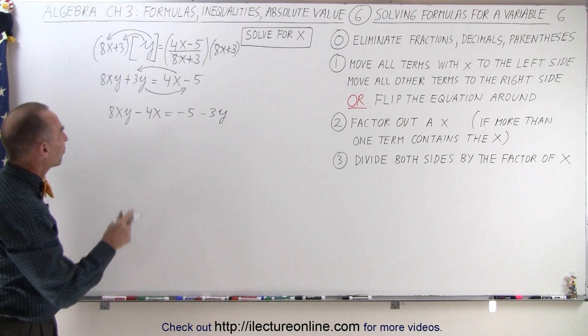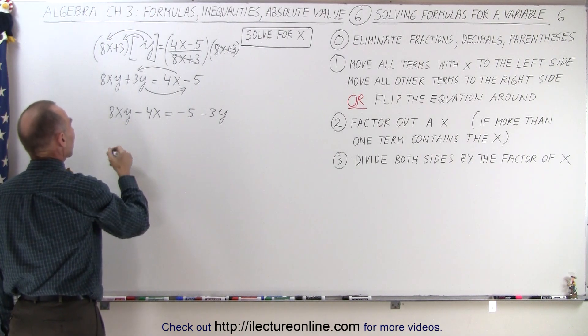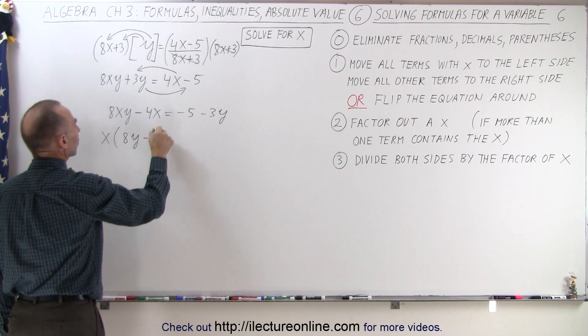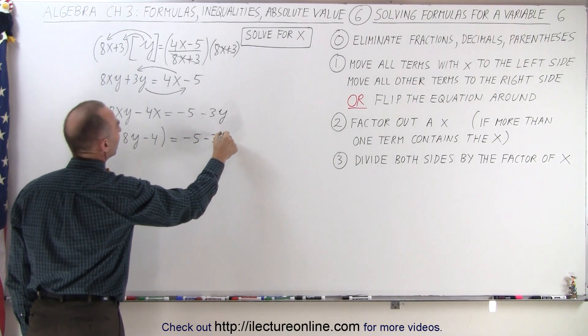The next thing I want to do is factor out an x. I have two terms that each contain an x. I want to factor out an x. I end up with x times 8y minus 4 on the left side equals minus 5 minus 3y.